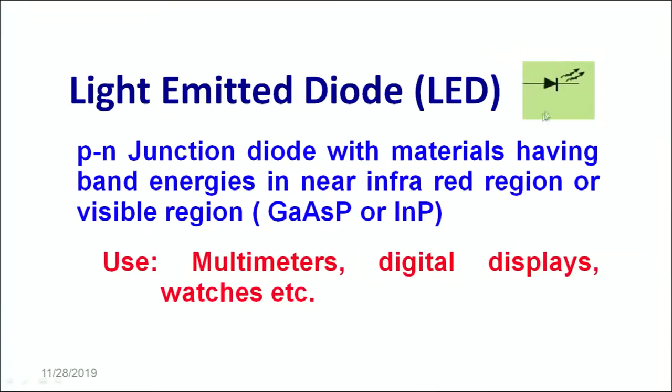Let's move on to the next kind of diode which is a light emitting diode. As the name suggests, a light emitting diode gives out light when it is allowed to conduct, which means that it converts the electrical current into light energy and gives out wavelength in the visible region. A light emitting diode is represented like this where these indicate the light pulse moving out of the diode. A p-n junction diode is basically made with materials having band energies near the infrared region or the visible region. Common types of material used are gallium arsenide phosphate or indium phosphate. Some of the common uses of this light emitting diode are multimeters, digital displays and watches.